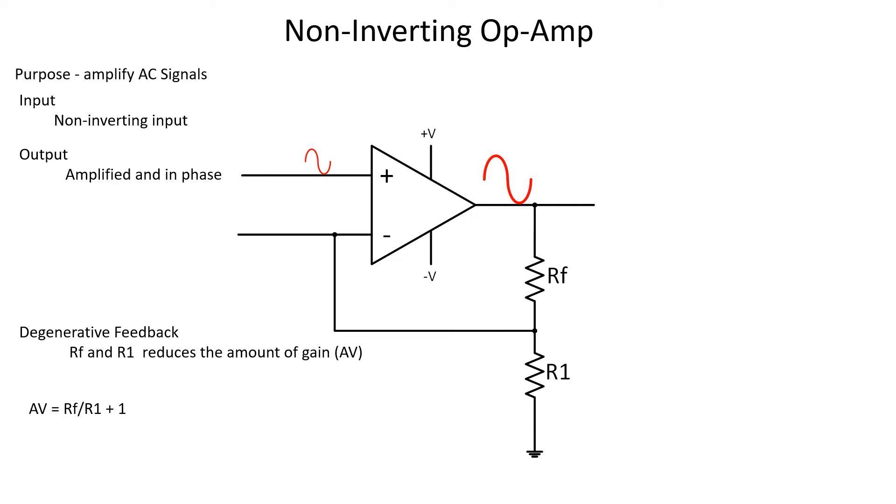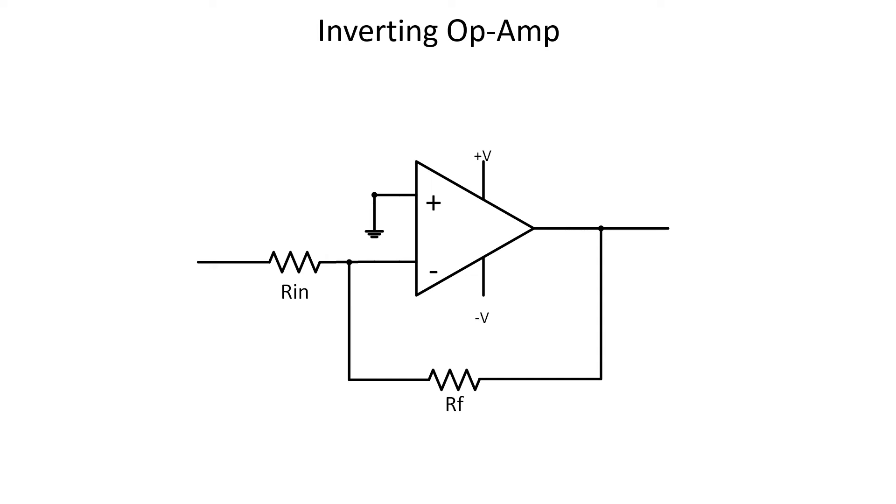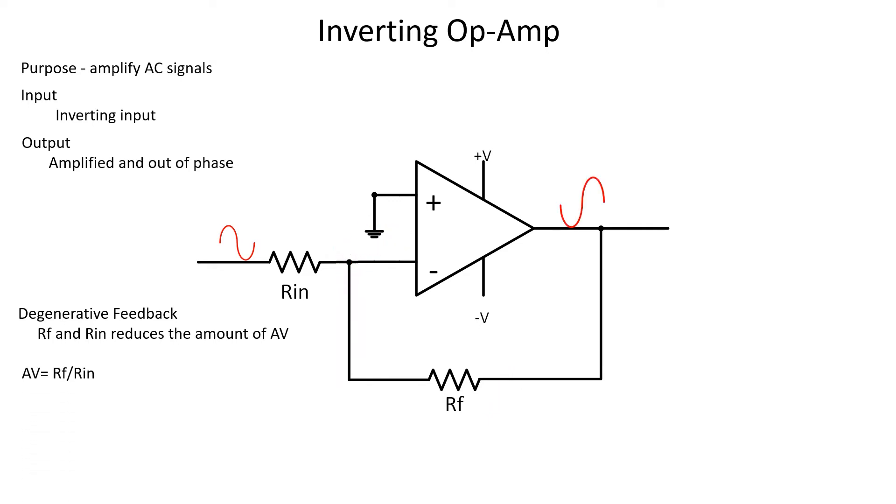Now let's invert everything we just talked about and discuss the inverting op amp. The purpose is the same as before, we're amplifying AC signals, but the difference this time is where the input's at and what the output looks like. This time the input signal comes in on the inverting input, which tells me that the output is going to be amplified and inverted or out of phase. As you can see on this op amp, it still uses degenerative feedback to reduce the amount of gain and protect the amplifier, but as you can see the calculated AV formula differs this time and can be calculated using RF divided by RN.